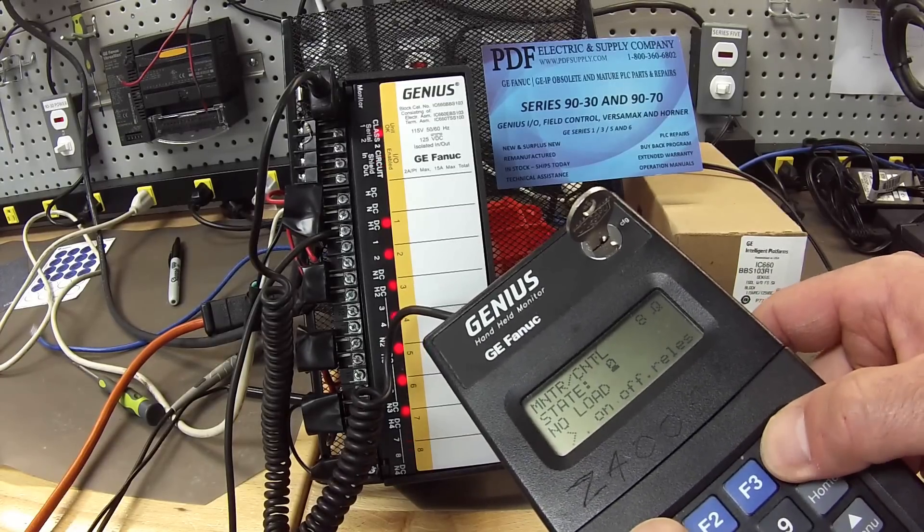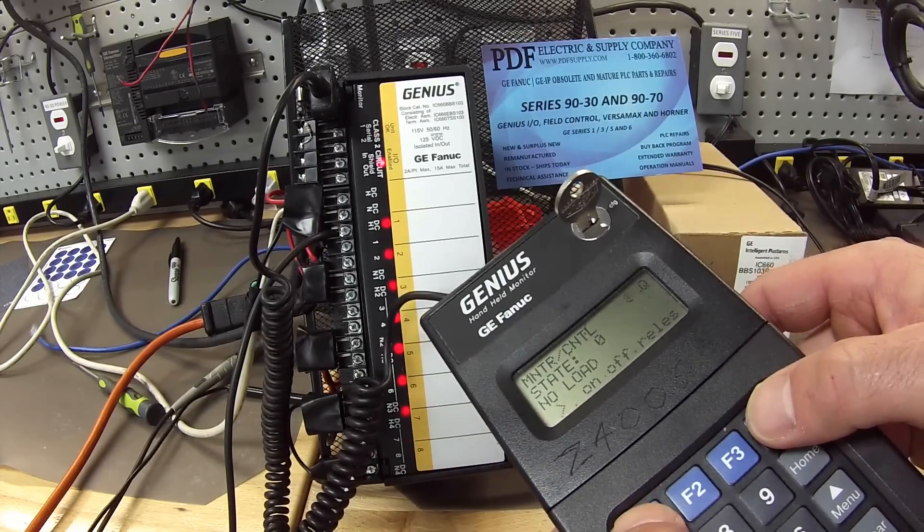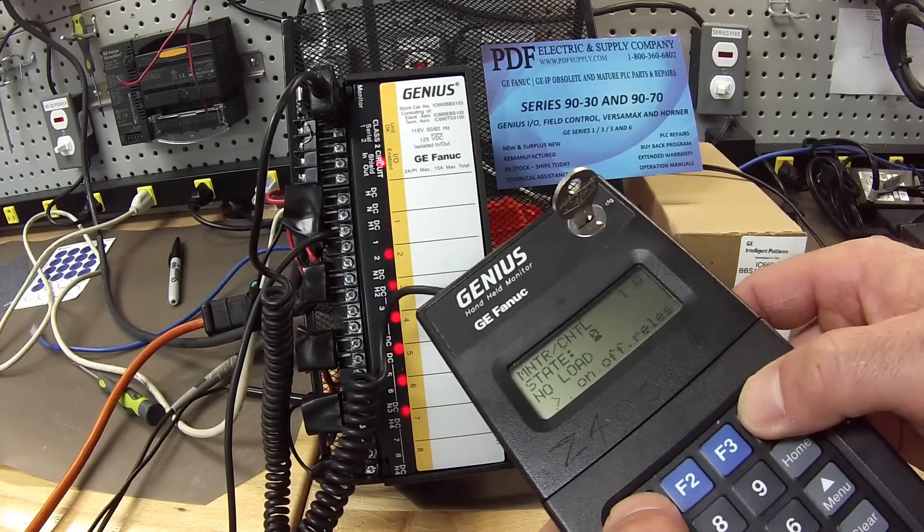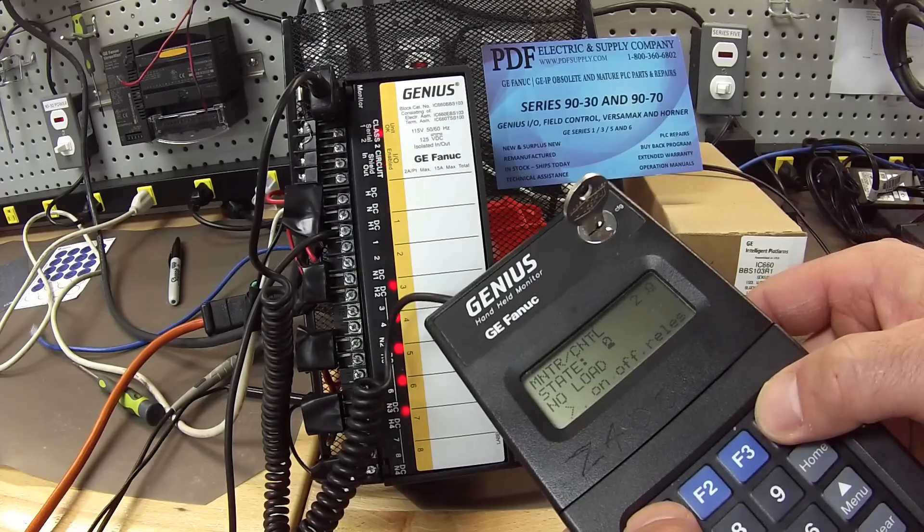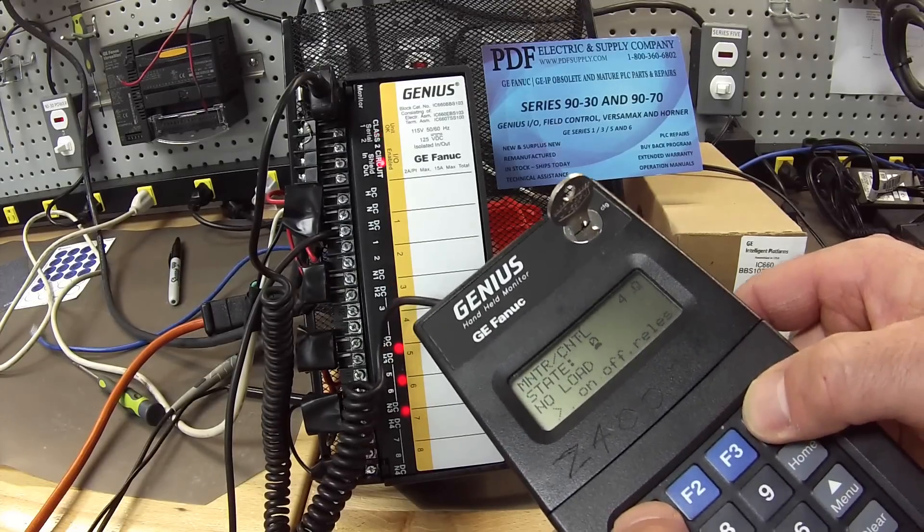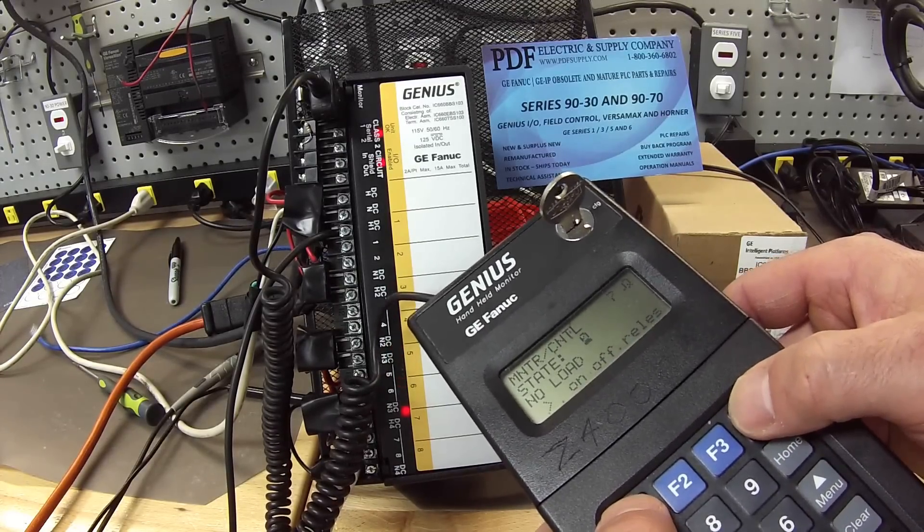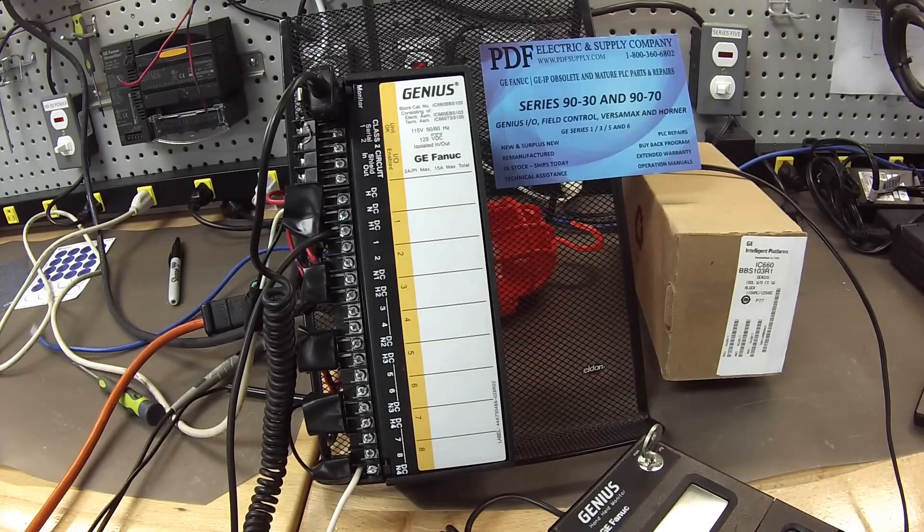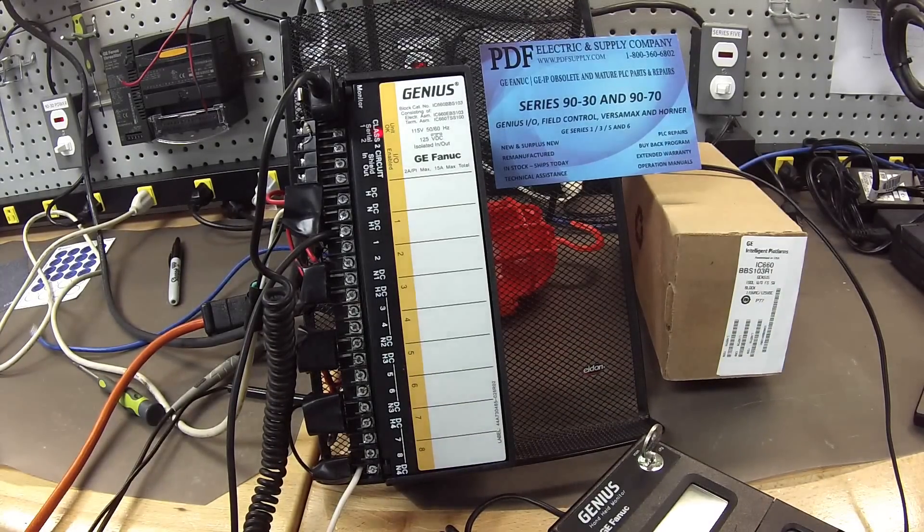So I'm going to use F4 to release, F1 to go to the next output. F4 release, next output, F4 release, and so on. Keep touching these two until all my outputs are off. So they're all in the off state, or so we hope.